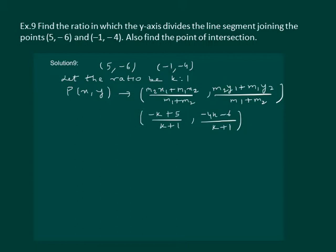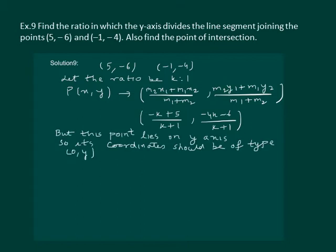But this point lies on the y-axis, which implies that the x-coordinate of this point P should be 0. Substituting the abscissa equal to 0, we get (-k + 5) / (k + 1) = 0. Solving this, we get k = 5, meaning the ratio is 5:1.